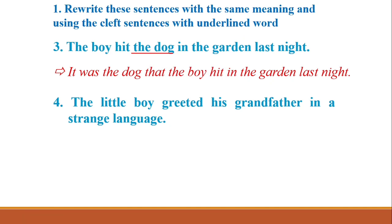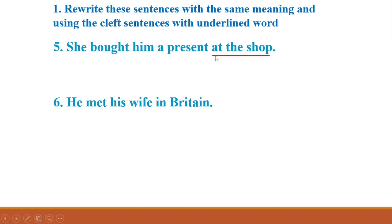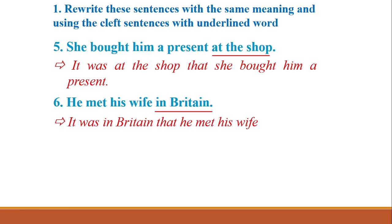Number four has 'his grandfather' — since 'created' is past tense, we write: 'It was his grandfather who/whom the little boy read about in the original language.' Number five has the adverbial 'after school' as the underlined word, and 'bought' is past tense — 'It was after school that...' plus the remaining clause. Number six: 'In Britain' — 'It was in Britain that he met his wife.' Very simple: write 'in Britain' after 'it was,' then add 'that' and the rest of the sentence.